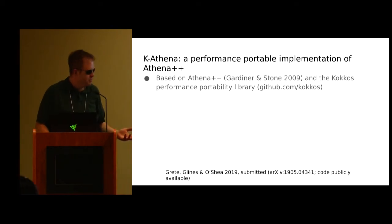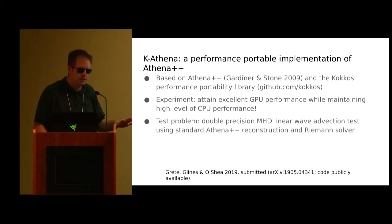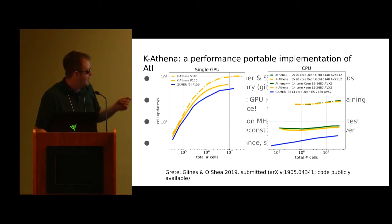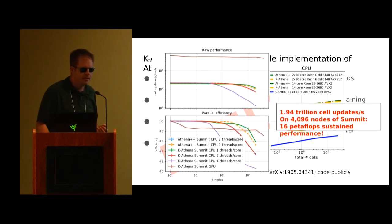So number one was Cathena, which I presented on yesterday. It's just this conversion of Athena plus plus using Kokkos so that it could run on GPUs and any accelerator that we might need to run on in the future. So it was very fast. It compares favorably well to both the CPU code that we started with and GPU codes that do the same sort of MHD simulations. And we were able to perform just under two trillion cell updates per second on Summit running on almost the whole machine. And this code is publicly available.